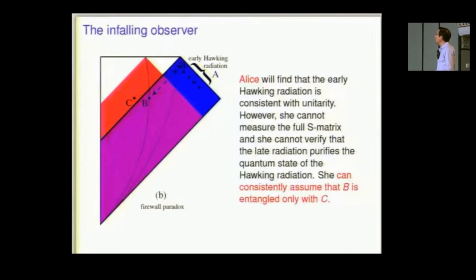Let's see how that works out. So the infalling observer, Alice, well, she will find indeed that the early Hawking radiation is consistent with unitarity. Those 90% everything is exactly as Bob's S-matrix predicted. But notice, and this is a very central point, notice that Alice does not even in principle have access to the full S-matrix. If Alice is going to be what we say she is, an infalling observer after 90% of the Hawking radiation, Alice is not going to see the remaining 10%.